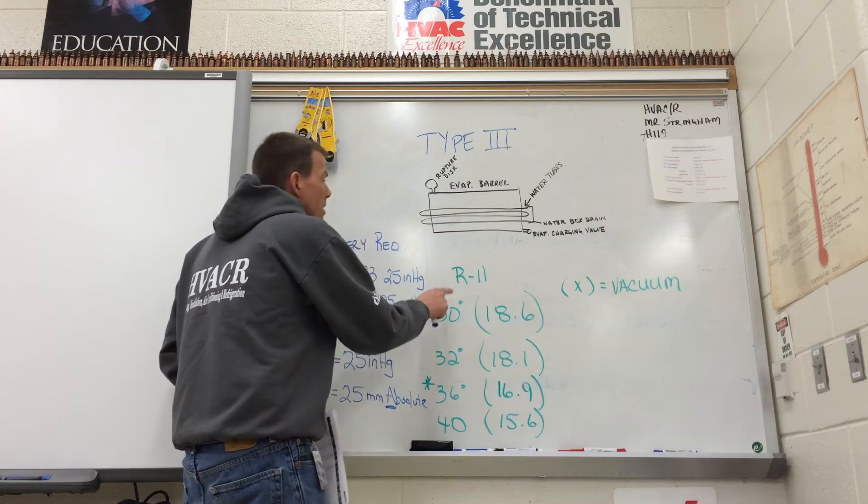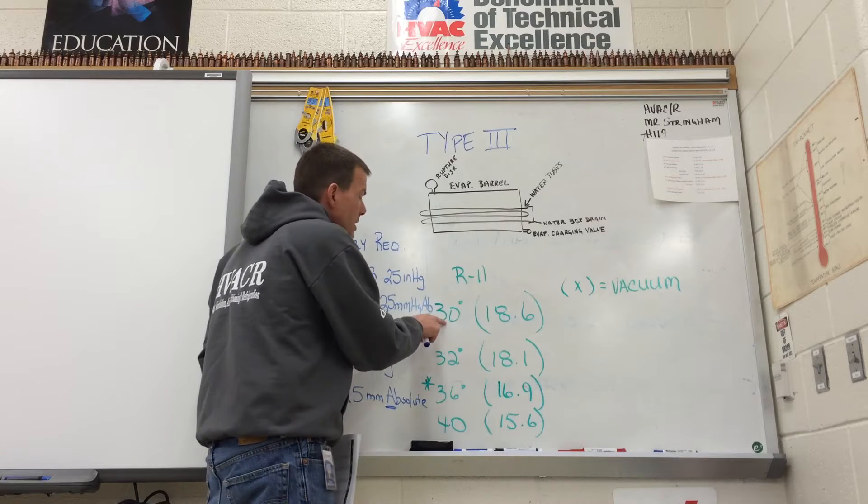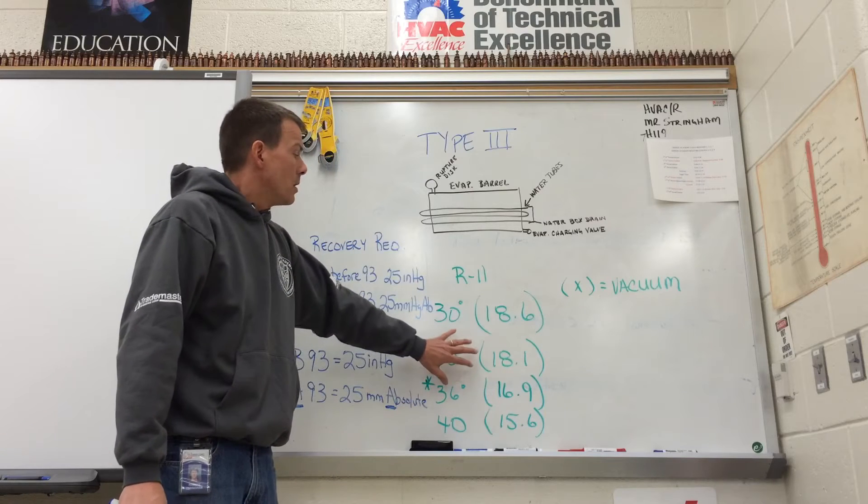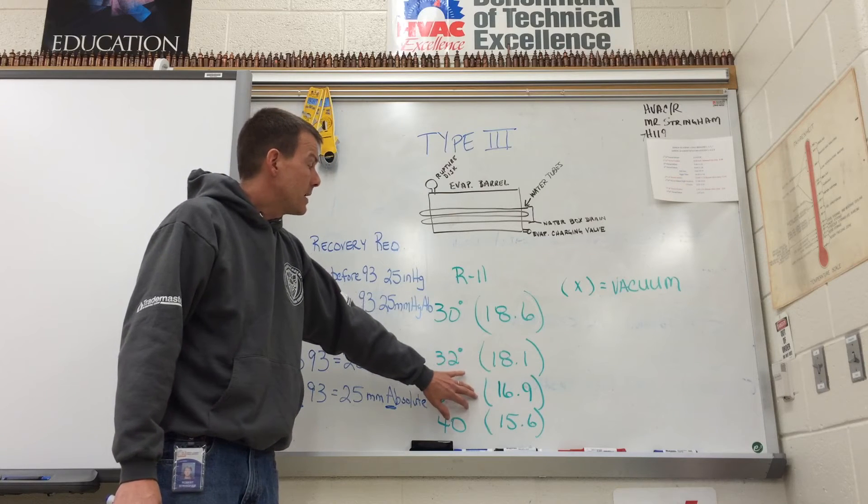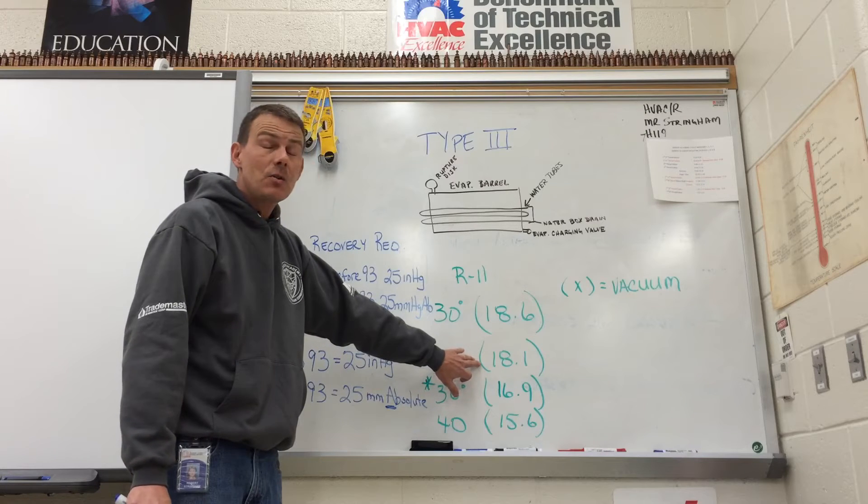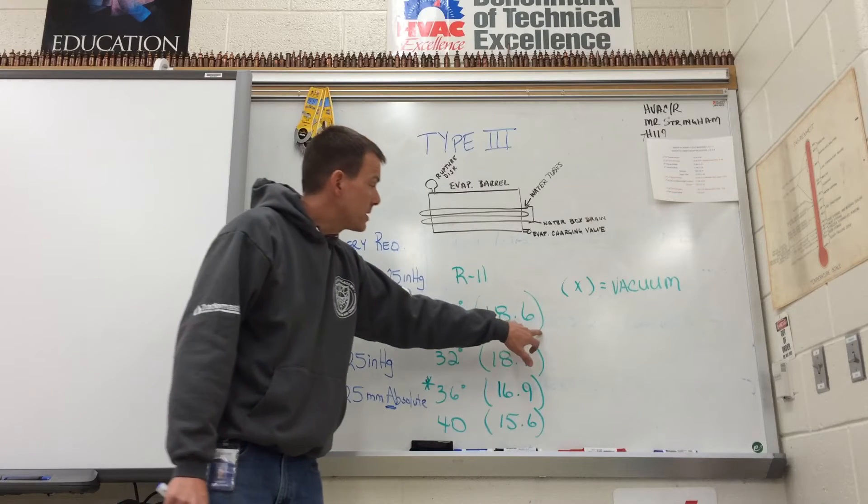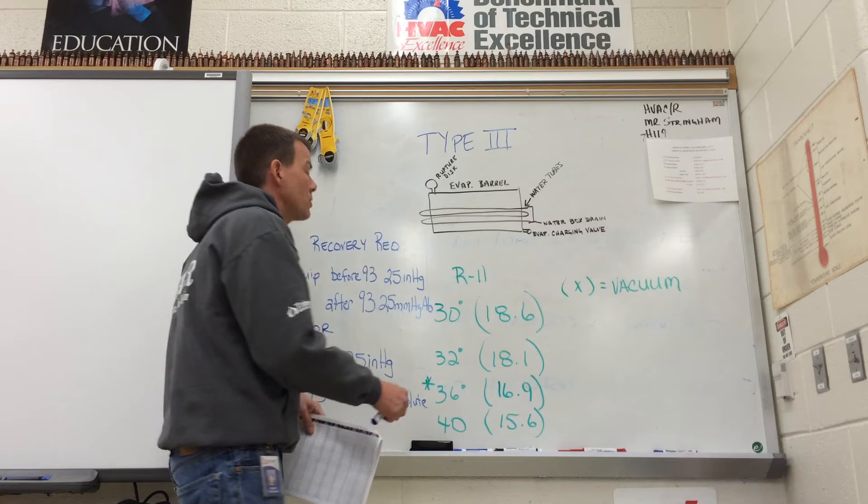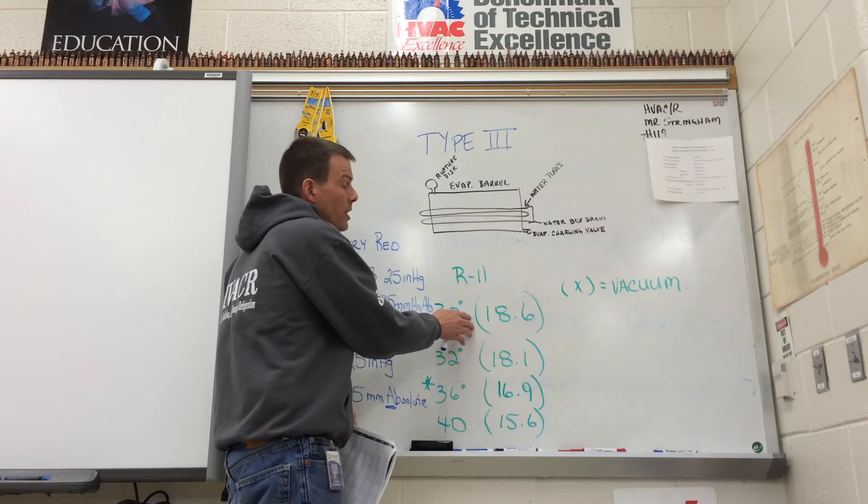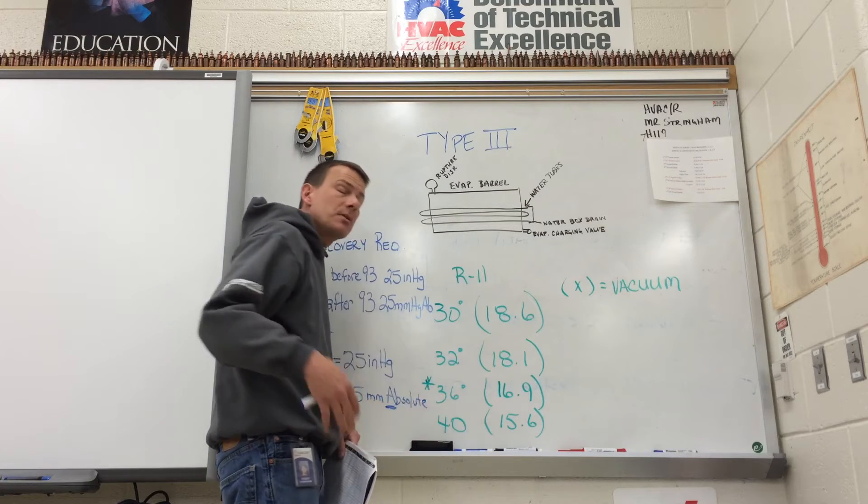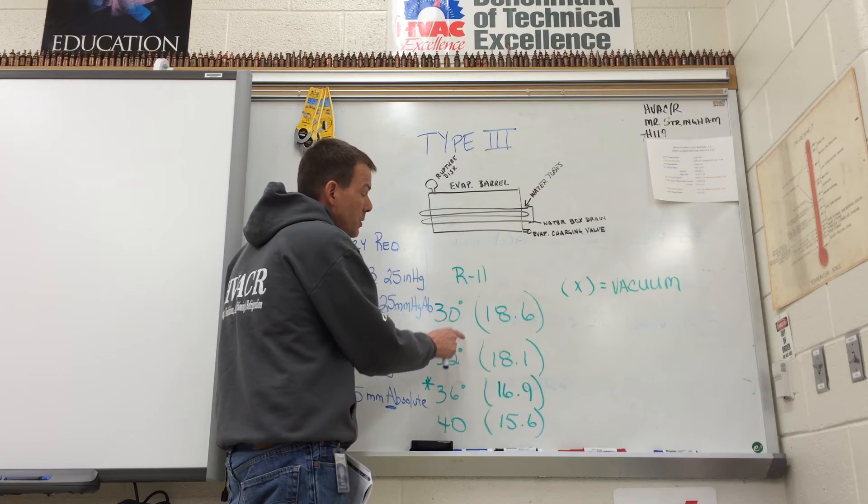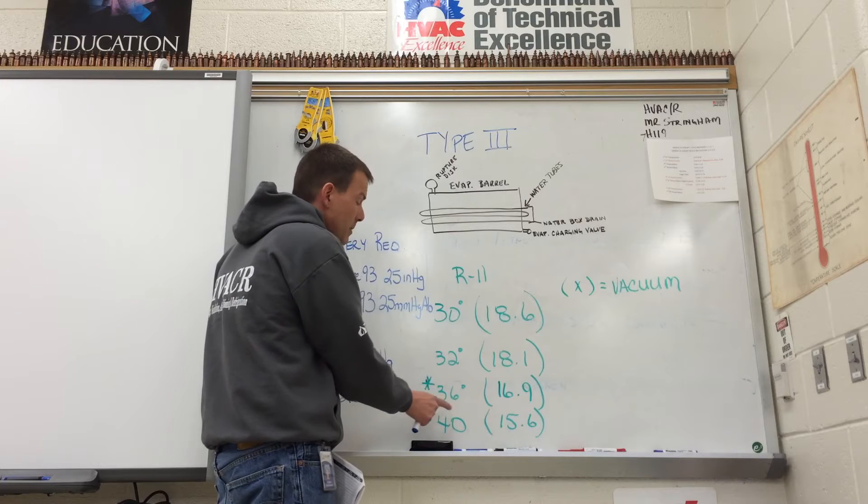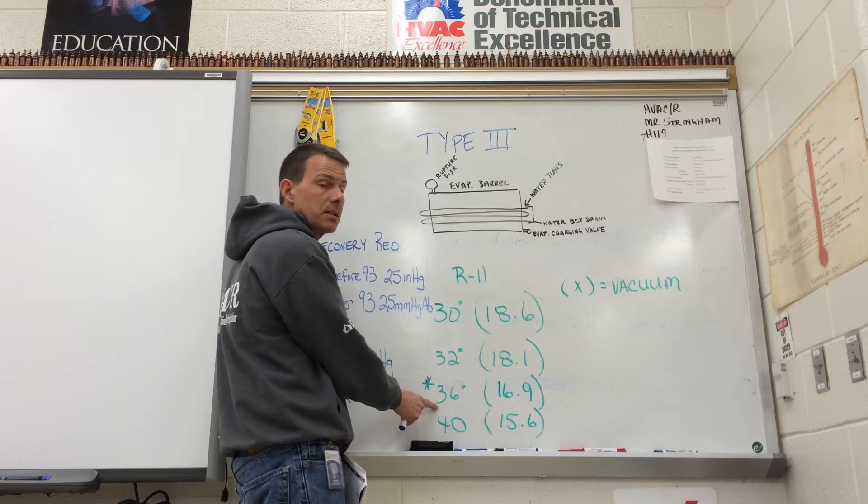So when you take a look at the R11 PT chart that they give you, they only give you 30 degrees and then they jump to 40 degrees. Well, the other two numbers that you're going to need to remember is 18.1 and 16.9. At 18.1 PSI, actually it's in a vacuum, which is why you have these parentheses. The parentheses, anytime you see it on the PT chart for ESCO, that's going to mean that it's actually in a vacuum. And in a vacuum, when the pressure rises, the number goes down. So that confuses most people. The number that they want you to get to is this 16.9. When you're 16.9 inches in mercury vacuum, that means the saturation temperature for R11 is 36 degrees. So that means that if you get the vaporized pressure of the refrigerant in the barrel up to 16.9, well, at 36 degrees, the water in the pipe won't freeze.